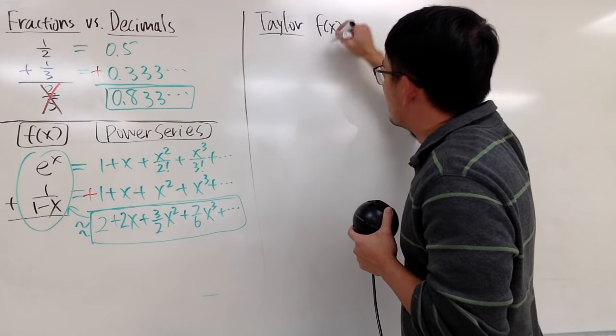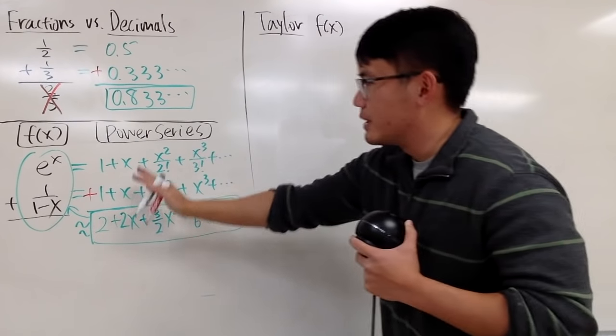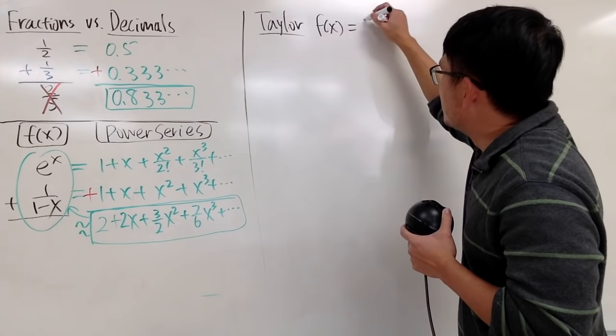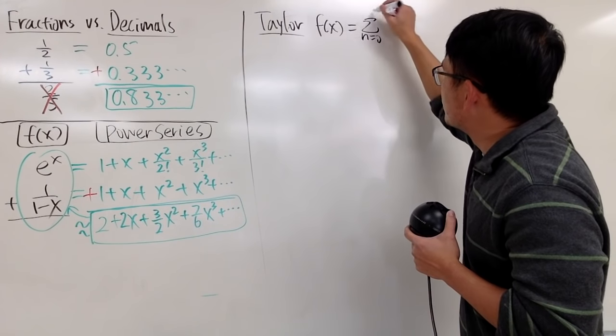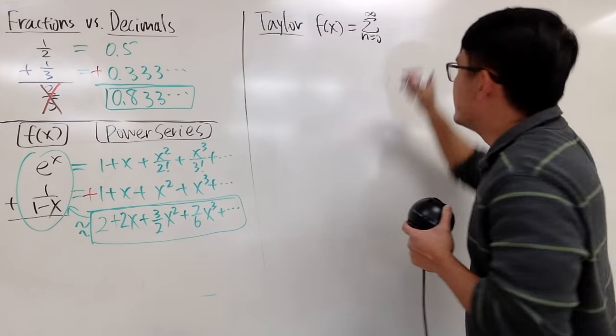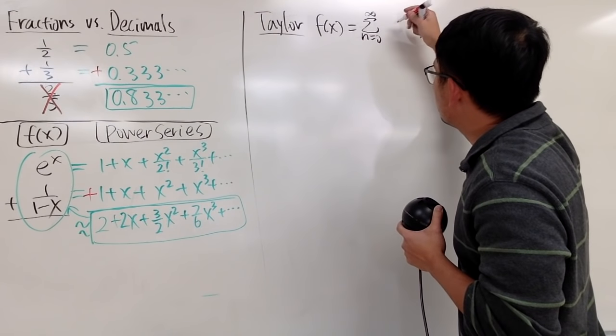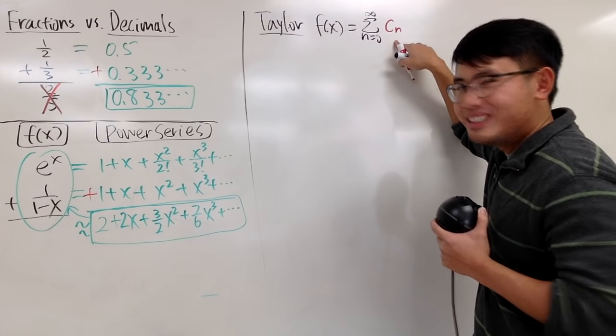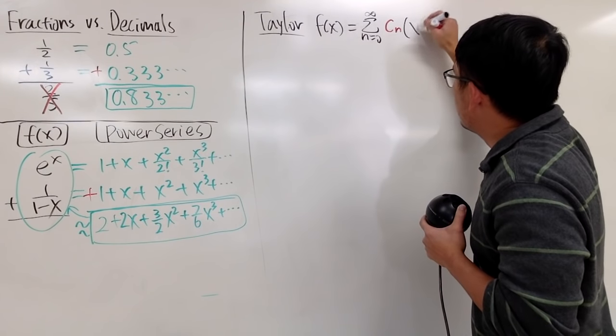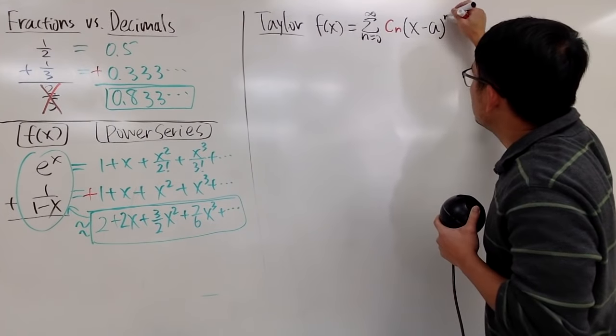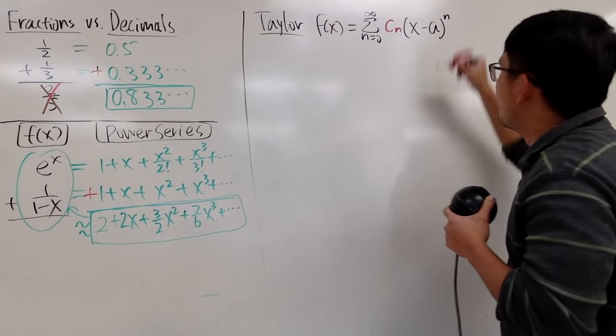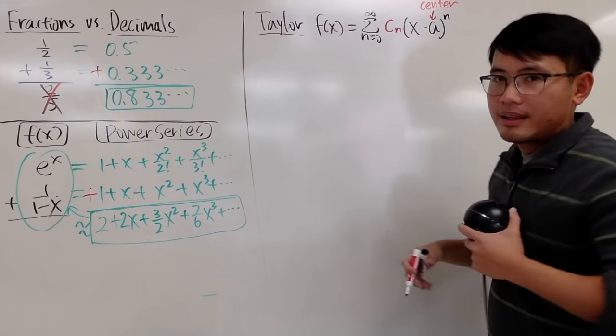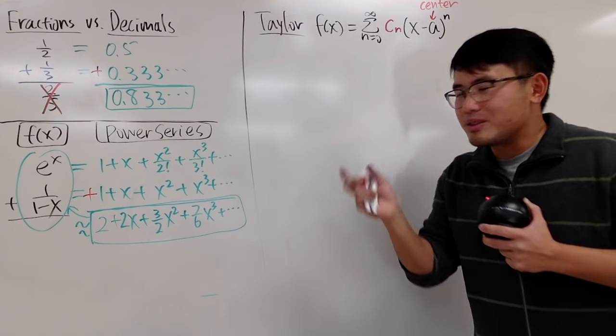First of all, our goal is to write f of x as an infinite polynomial, as a power series like this. And I will write this down in the summation form. This is the sum as n goes from 0 to infinity. And the main goal is to figure out the coefficients. So I will just put down cn right here. This is the coefficient sequence. And then you have to write down x minus some number a raised to the nth power. Well, what is a? a is what we call the center.